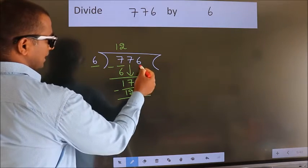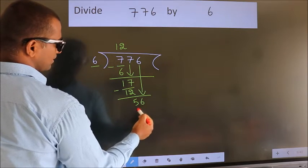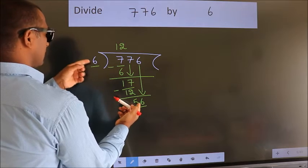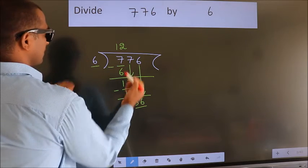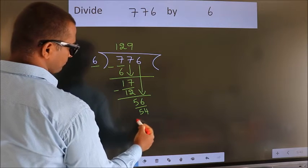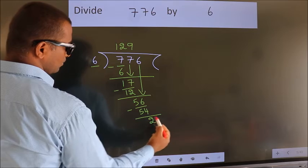After this, bring down the beside number. So 6 down, so 56. A number close to 56 in 6 table is 6 nines, 54. Now we subtract. We get 2.